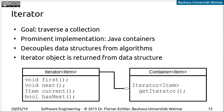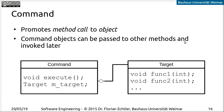Another very common behavioral pattern is the command pattern. Here the idea is that a method call is converted to an object. That means you can take such a command object, pass it around, put it in a list, and then at a later point in time, whenever convenient, call the execute function and the actual method on the target object will be executed.